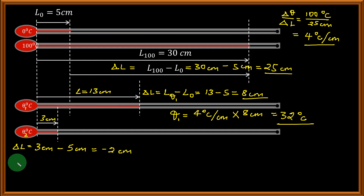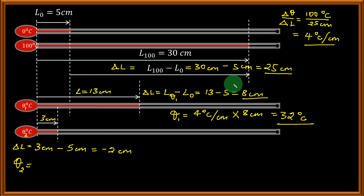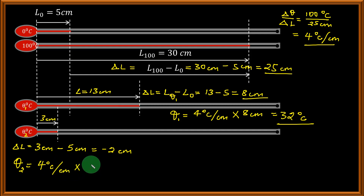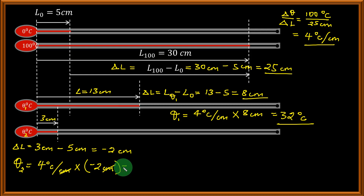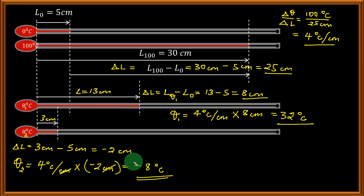To calculate theta 2, we multiply the change in temperature per unit length (4 degrees Celsius per cm) by minus 2 cm. The units cancel leaving degrees Celsius, giving us minus 8 degrees Celsius. So the temperature is definitely below 0 degrees Celsius.